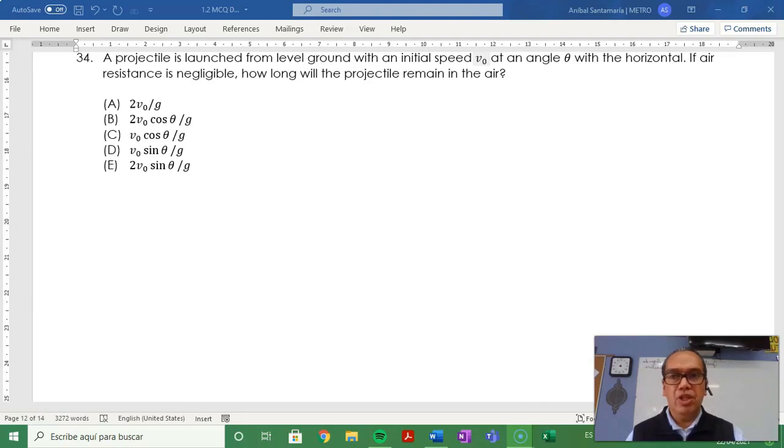Problem 34: A projectile is launched from level ground with an initial speed v0 at an angle theta with the horizontal. If air resistance is negligible, how long will the projectile remain in the air?